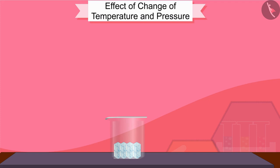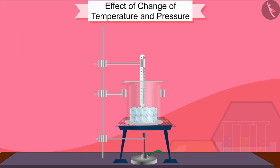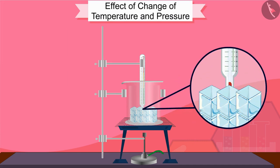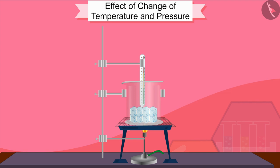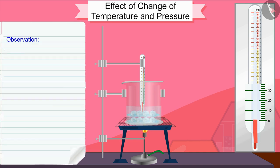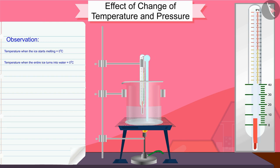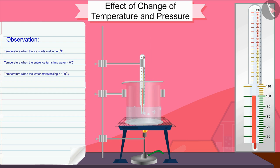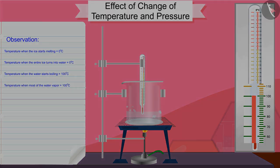Take 150 grams of ice cubes in a beaker and hang the thermometer in such a way that the bulb of the thermometer is touching the ice. Start heating the beaker on low heat flame and note down the temperature when the ice starts melting. When the entire ice turns into water, note down the temperature again. Note down the observation in the change from solid to liquid. Now put the glass rod in the beaker and heat it by stirring till the water starts boiling. Keep an eye on the thermometer until most of the water vapor is formed. Note down the observation in the change from liquid state to gaseous state.